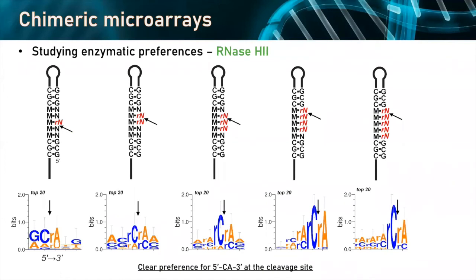Starting with the simplest case — single RNA incorporation — we know the cleavage is going to be 5' to the RNA insert. In the subset of sequences that were the best cleaved, meaning the biggest loss of fluorescence, we do find a pattern: in those better-cleaved substrates there is almost always a C just 5' to the cleavage site, i.e., a DNA C here, and an RNA A as the RNA insert. That C-A motif is found in the better-cleaved substrates. We see this motif even when we start adding consecutive RNA incorporations, where again we know where cleavage takes place with multiple RNA inserts, and again the C-A pattern shows up.